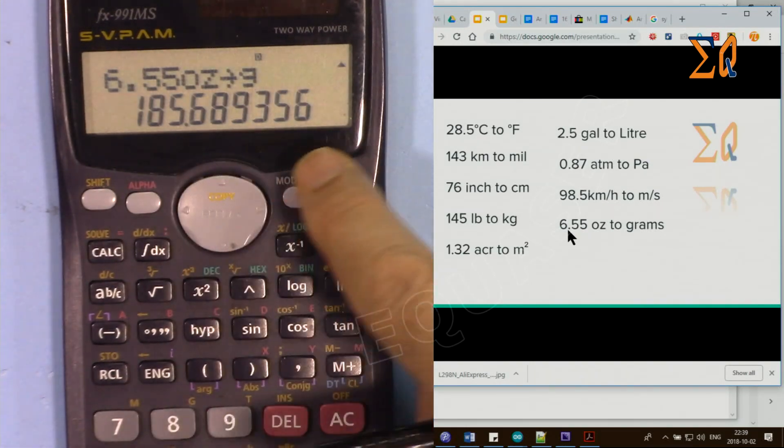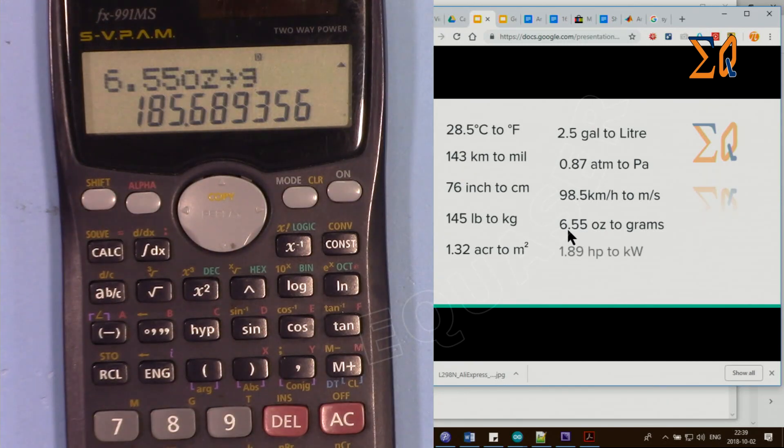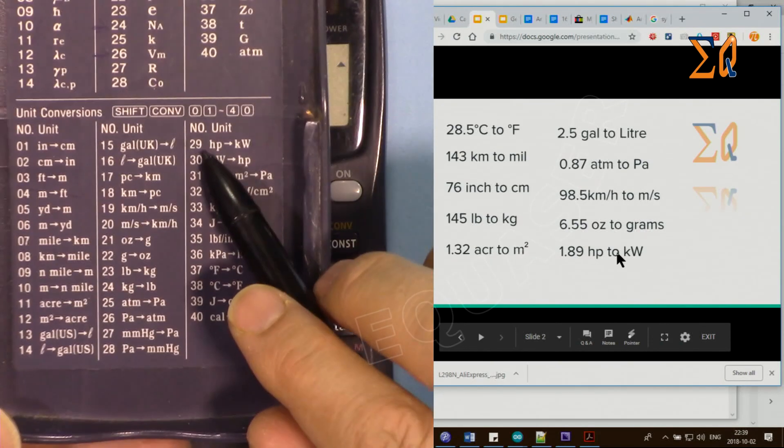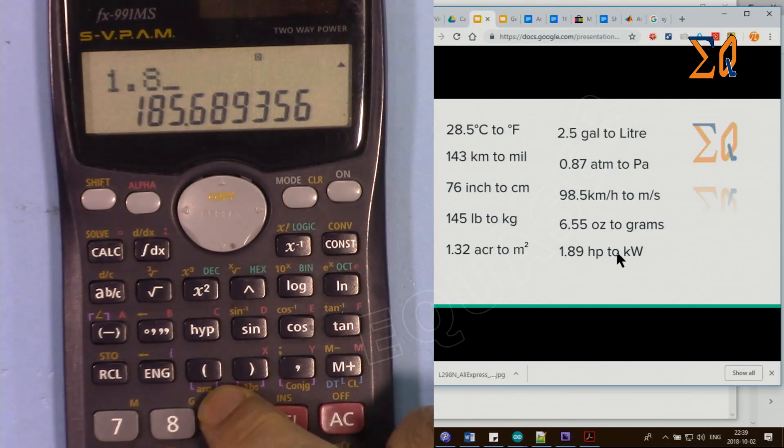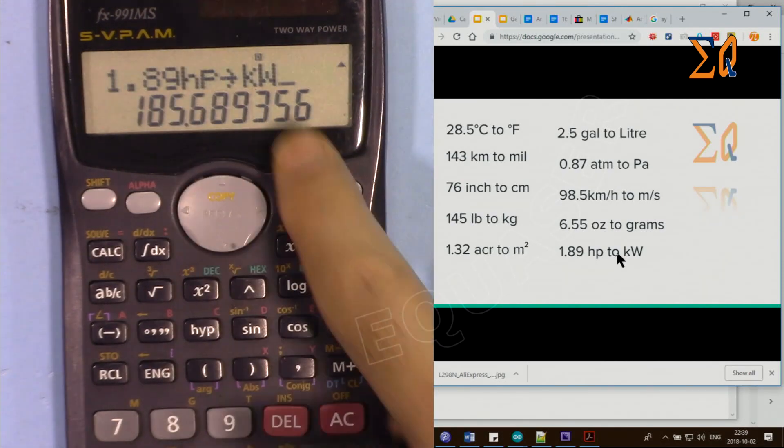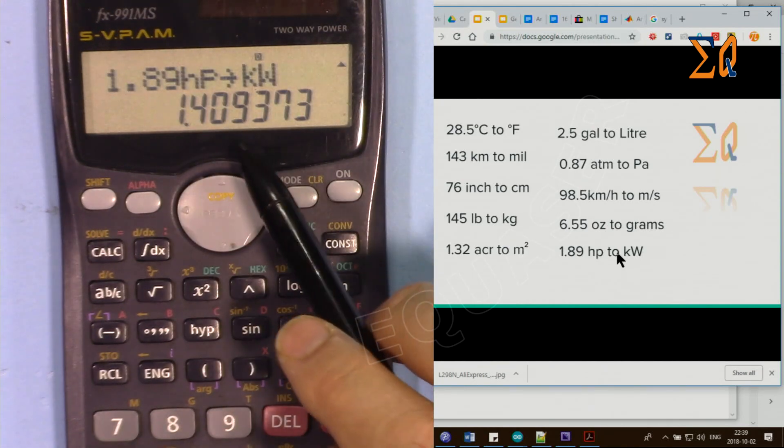Finally, if you have 1.89 horsepower and you want to convert it to kilowatts, horsepower to kilowatt is 29. So 1.89, second function, convert, 29, horsepower to kilowatt, plus, equal, 1.409 kilowatts.